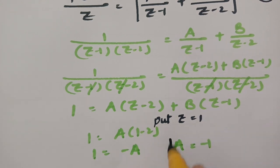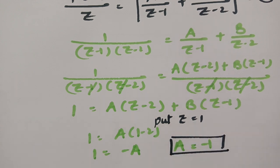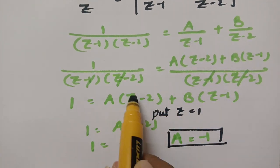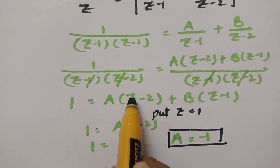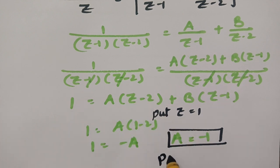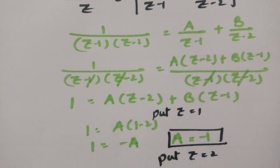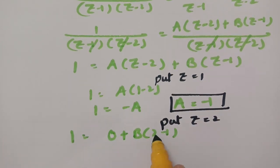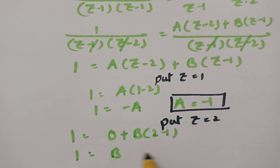After getting the A value, now I have to find out the value of B. For finding B, I have to make A equal to 0, so I substitute Z equal to 2. This gives 1 equal to B times of 2 minus 1, so B equals 1, and therefore B value is equal to 1.